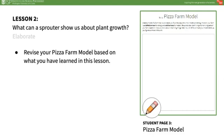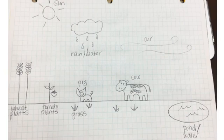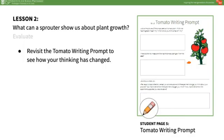Next, have students revisit their pizza farm model and work to revise it according to what they have learned in this lesson. For example, if students drew arrows from soil to plants, they should now omit those arrows. If students are still struggling with the idea that soil gives plants most of their matter, ask them: What evidence did you see from our sprouter so far that might make you think differently? In the evaluate portion of this lesson, have students revisit the tomato writing prompt to see how their thinking has changed or deepened. They should answer the part about how the seed sprouter investigation has changed their thinking about what plants need to grow, using specific evidence.